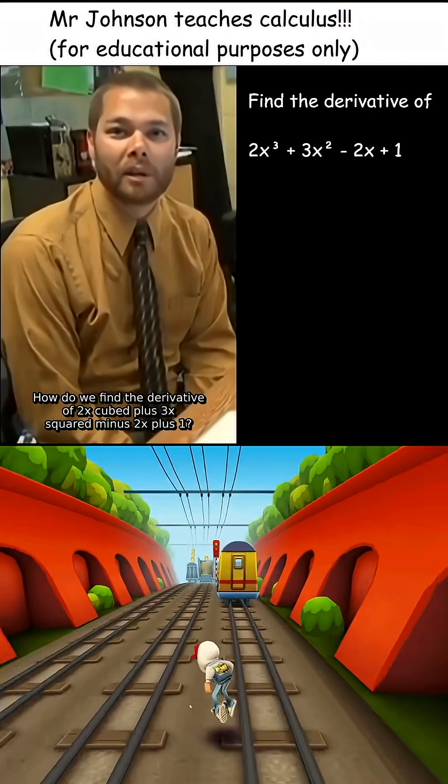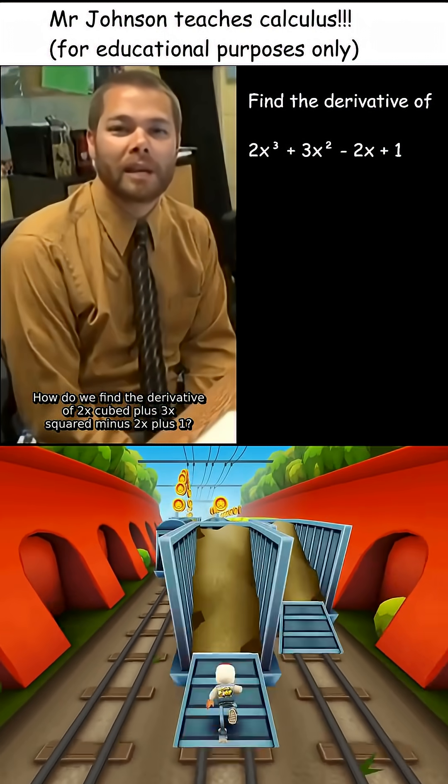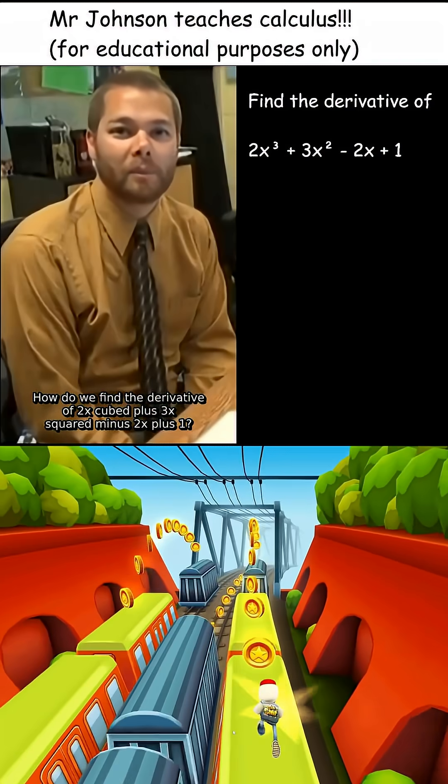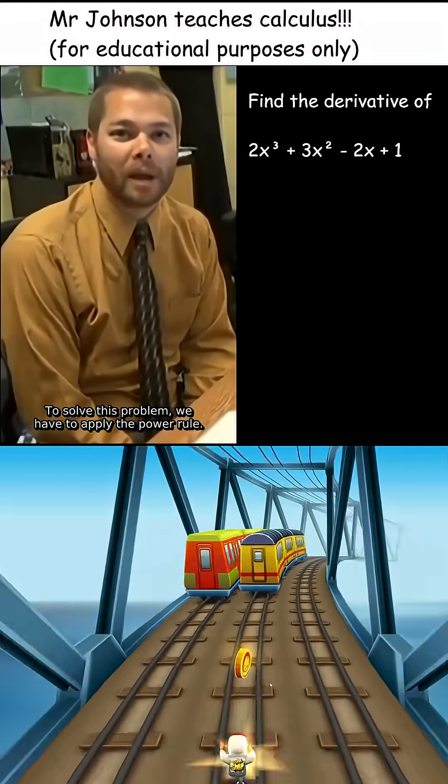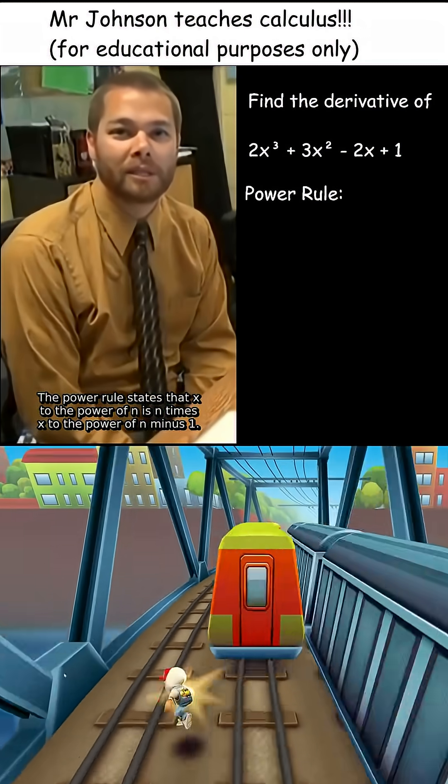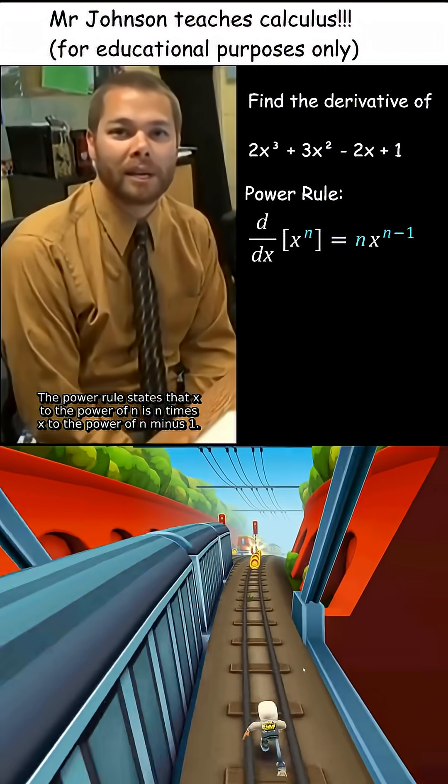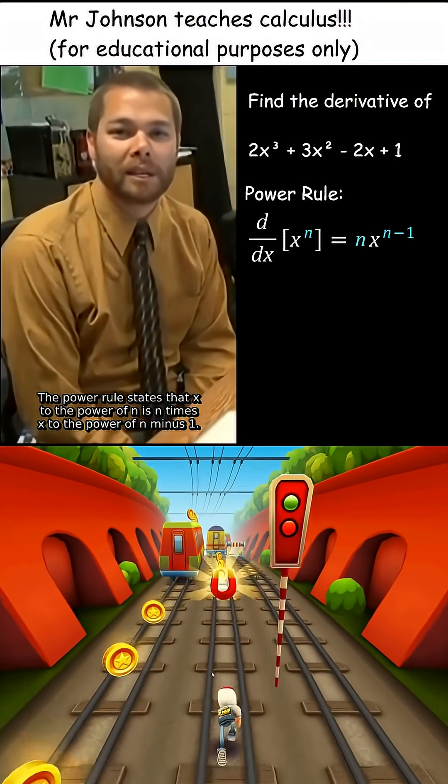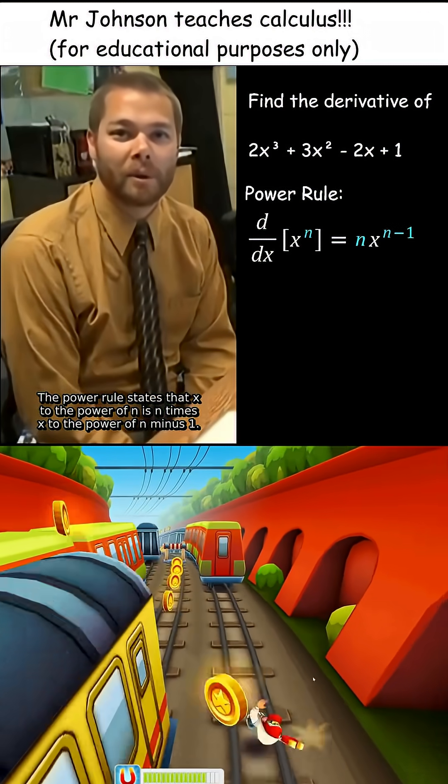How do we find the derivative of 2x³ + 3x² - 2x + 1? To solve this problem, we have to apply the power rule. The power rule states that the derivative of x^n is n times x^(n-1).